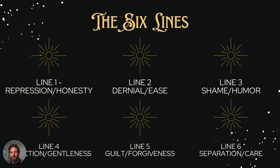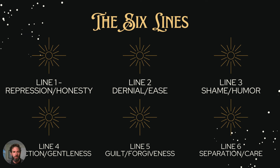Line four is rejection. We came clean with how we're feeling, overcame our shame, went to talk to someone — and they rejected us because they haven't done their work. It's not about you, it's about them. But we take what they say as gospel and feel that rejection at our core. The solution is gentleness. Think about a dog who has been mistreated — how would you act with that animal? That's the gentleness that unlocks this shadow keynote of rejection.